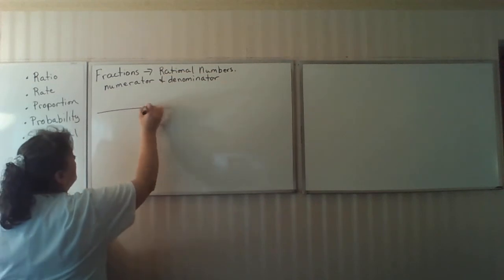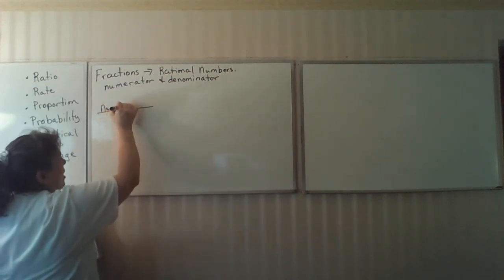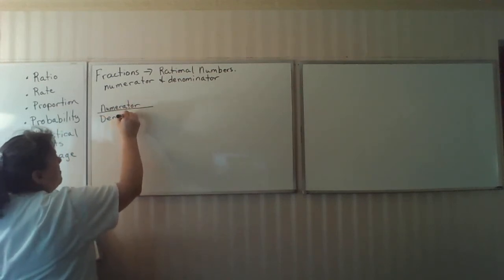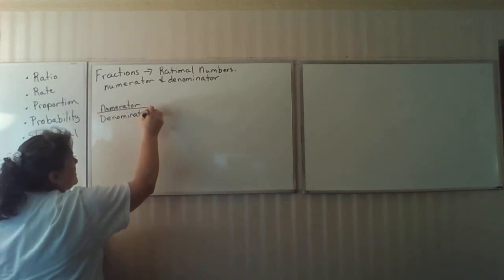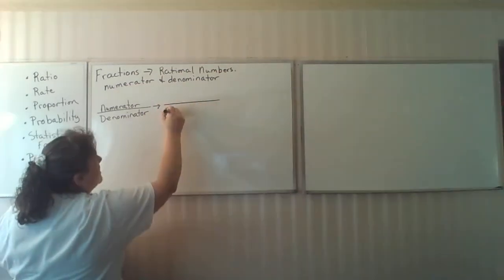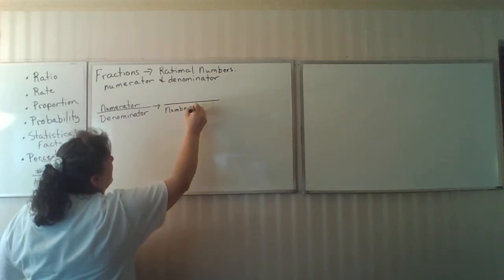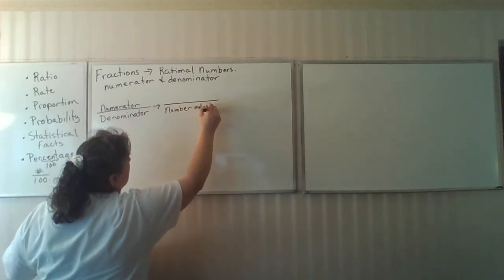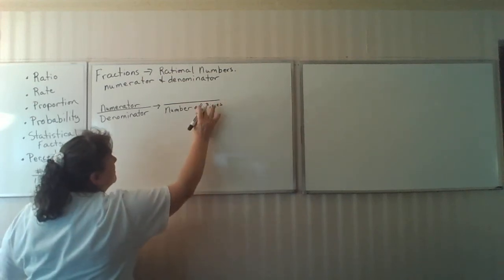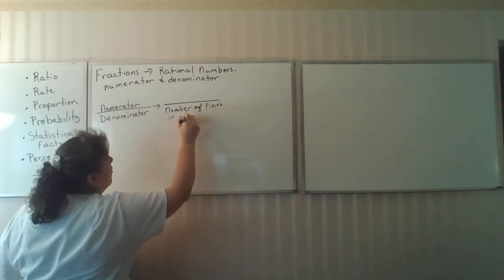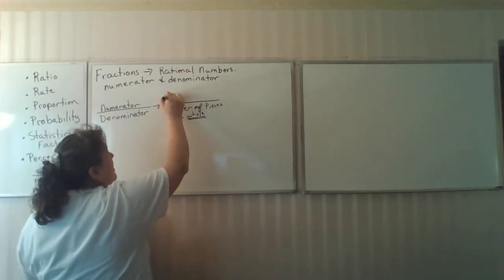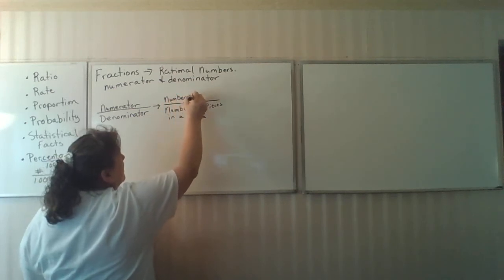A fraction consists of a numerator which is the top number, and a denominator which is a bottom number. And one thing you need to understand is what are those two numbers. The denominator is the number of pieces, and they're equal sized pieces, in a whole. In other words, one whole item. The top number is the number of pieces selected.